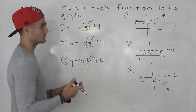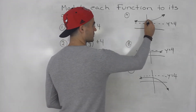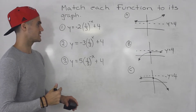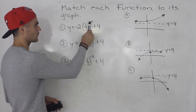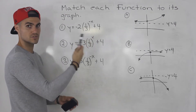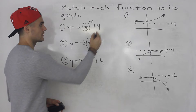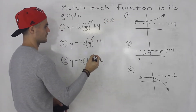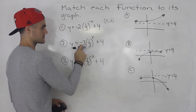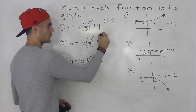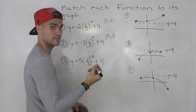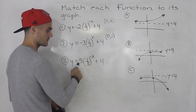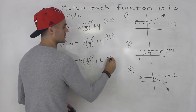Another thing I like to do is look for the y-intercepts — these points here. You find the y-intercept by plugging in 0 for x. For the first function, 1/3 to the power of 0 is 1, times negative 2 is negative 2, plus 4 gives a y-intercept of (0, 2). For the second, 1 times negative 3 plus 4 gives us 1, so the y-intercept is (0, 1). For the third, 1/3 to the power of 0 is 1, times 5 is 5, plus 4 gives us 9, so the y-intercept is (0, 9).